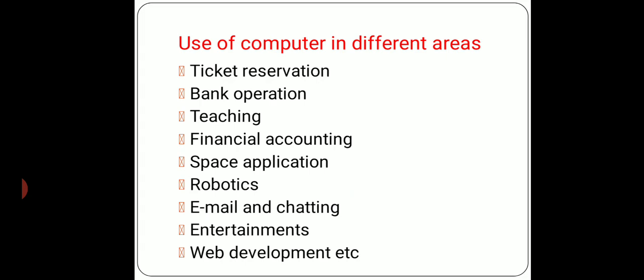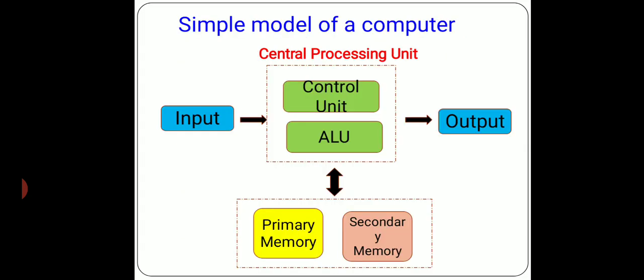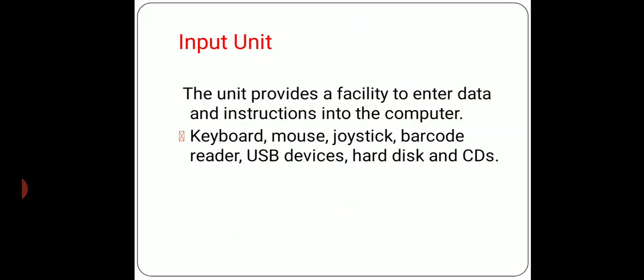Use of computer in different areas: most of the major areas we are aware of — ticket reservation, bank, corporation, teaching, financial, accounting, space, application, robotics, email, chatting, entertainment, web development, etc. — all have been discussed. In the simple model diagram: input, process, and output. Inside process there is control unit and ALU — two parts of CPU — and below that memory: primary and secondary memory.